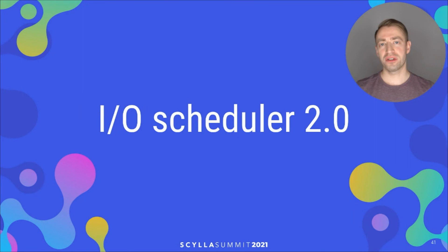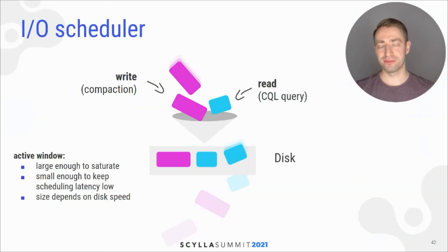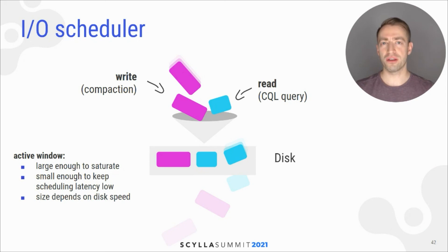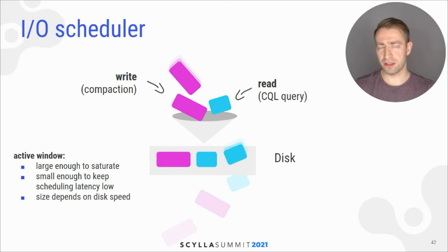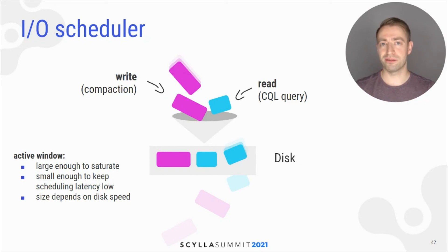The IO scheduler was also improved. The IO scheduler is the component which ensures that when you have a high-priority request, it will experience low latency even if there is a background workload fully utilizing the disk, like sustained compaction. It works by admitting enough requests to saturate the disk, but not too many, so that when a high-priority request arrives it will not have to wait for long.